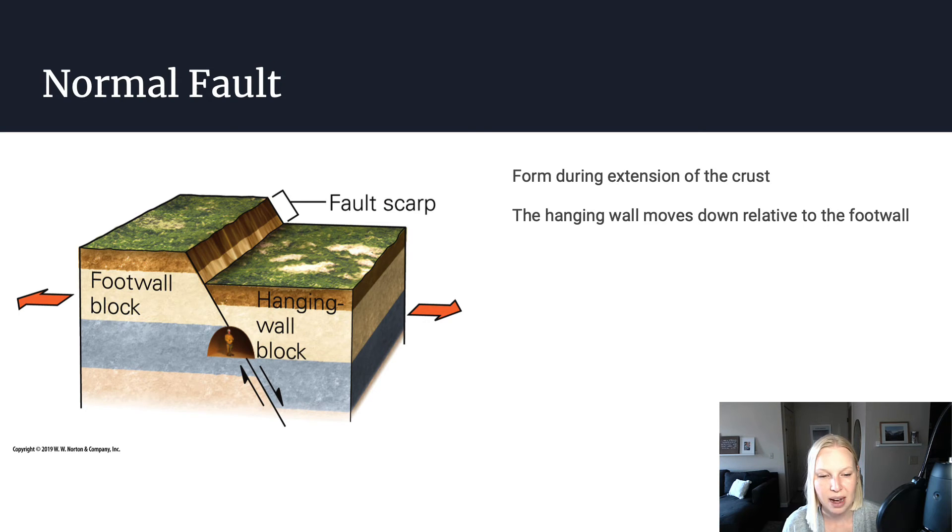And in this scenario, you have the hanging wall that is moving relatively down relative to the foot wall. A normal fault is typically pretty steep with a steep dip, but not always. Normal faults have a dip slip motion. So the hanging wall is moving relatively down, it's not moving side to side, it's moving down relative to the foot wall.